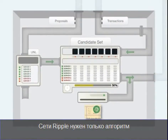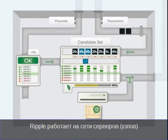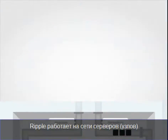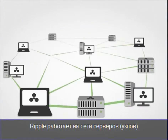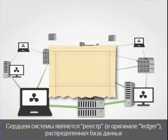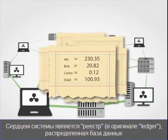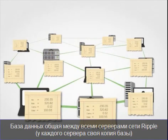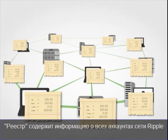Ripple only requires an algorithm. Ripple runs on a network of servers. At the heart of the network is the ledger — a distributed database, shared with all the servers in the Ripple network. It stores information about all Ripple accounts.